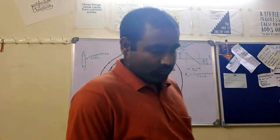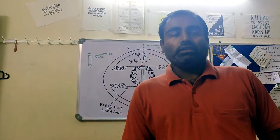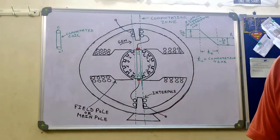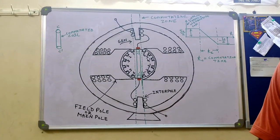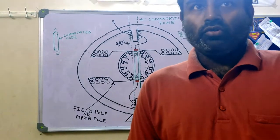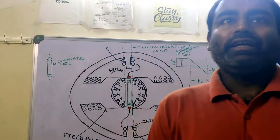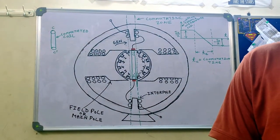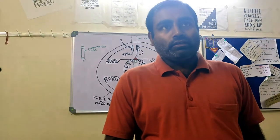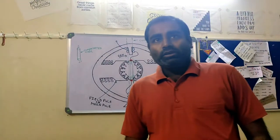Due to armature reaction, we see that there is a delay in commutation. By delay in commutation, we mean that the time taken for the reversal of armature coil current — the coil which is undergoing commutation — that time is increased, or rather the change of current through the commutated coil becomes slow. By the time the change is going to take place completely, the contact between the commutator segment and brush is broken, resulting in incomplete commutation. Because of that, there is sparking at the trailing edge of the brush.